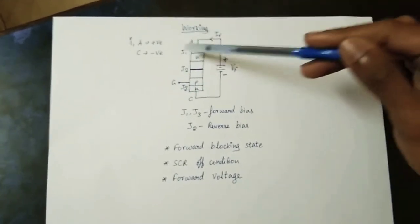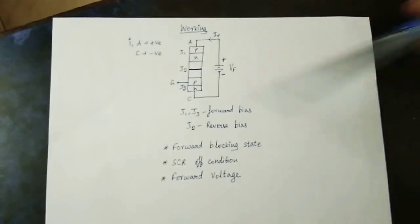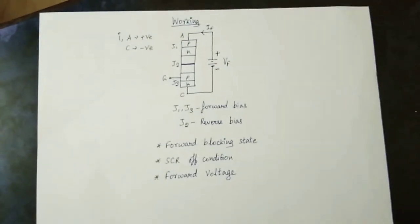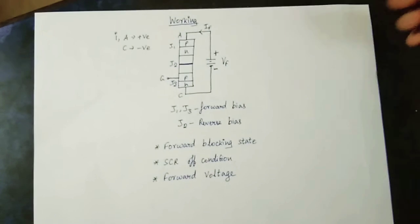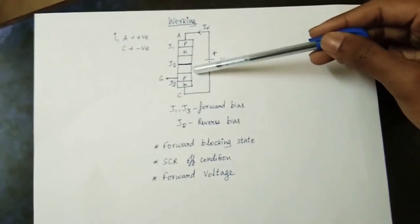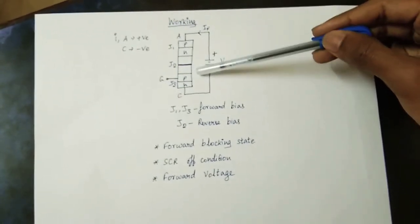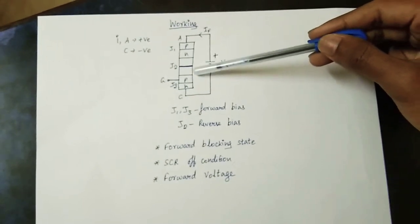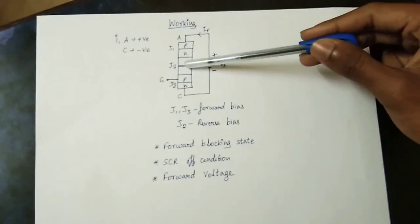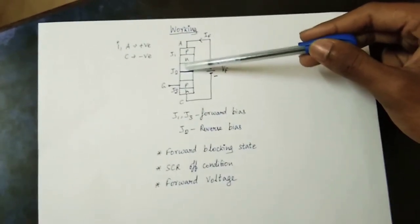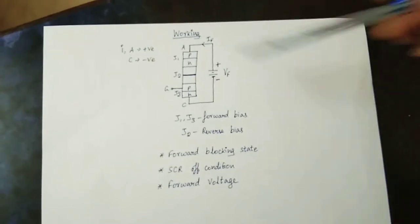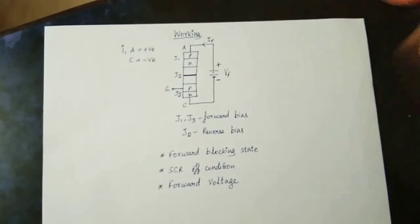First condition: anode positive and cathode negative — this is a forward bias. With forward bias, J1 and J3 are forward biased, and J2 is reverse biased. The current is very low — this is the reverse saturation current. Hence this is a forward blocking state.